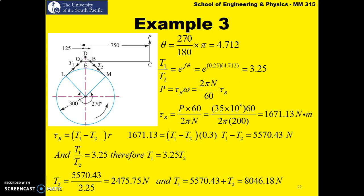First we calculate the tension ratio. The lap angle of 270 degrees converts to 4.712 radians. The tension ratio T1 over T2 equals exponential F-theta, giving a value of 3.25. The power given is 35 kilowatts, and power equals braking torque times angular velocity, so we solve for braking torque, which equals 1671.13 Newton-meters. Since braking torque equals T1 minus T2 times radius, and the drum radius is 300 mm, we obtain T1 minus T2 equals 5570.43 Newtons, and T1 equals 3.25 T2.